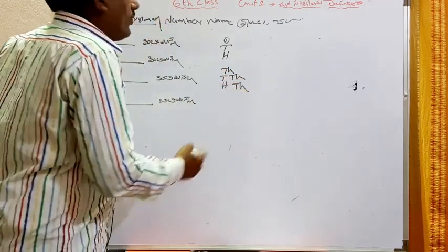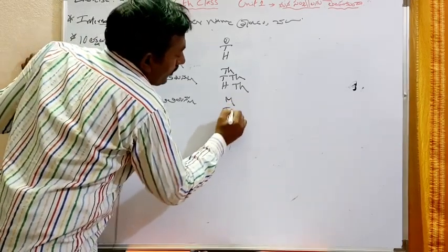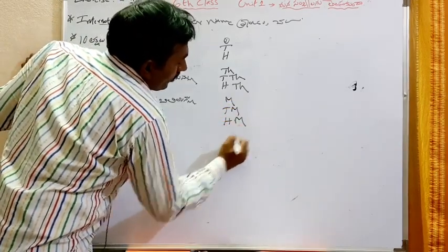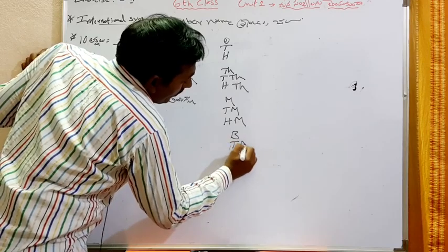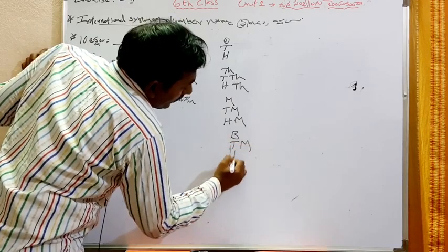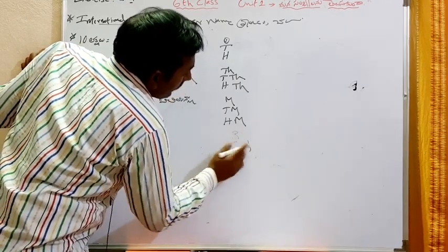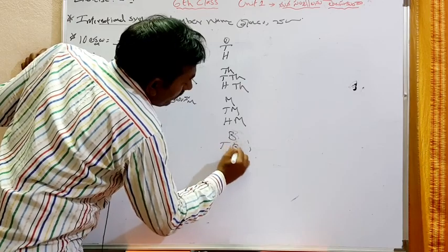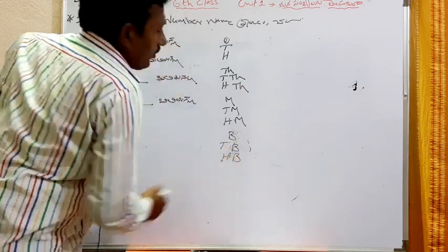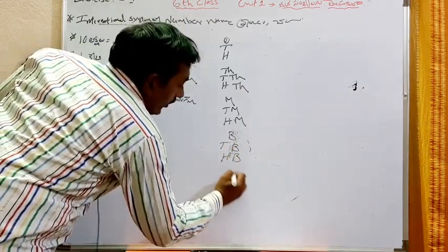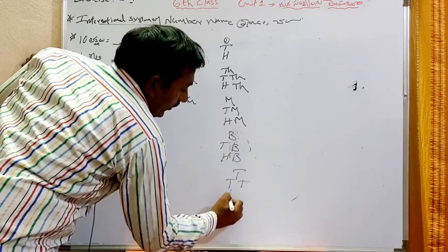Let's see it. Millions, tens of millions, 100 million, billion, ten billion, hundred billion, ten billion, 100 billion, trillion, ten trillion, hundred trillion.